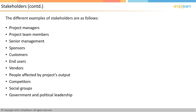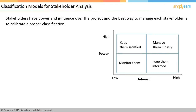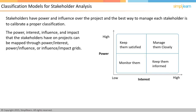Not all stakeholders have the same amount of influence or power over the project. Therefore, the way to manage each stakeholder needs to be calibrated based on a proper classification — this is the role of the classification model. You can come up with a grid that maps the power of the stakeholders, the interest they have, the influence they may have, or the impact they can have, through power-interest, power-influence, or influence-impact grids.